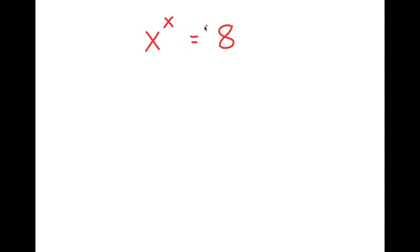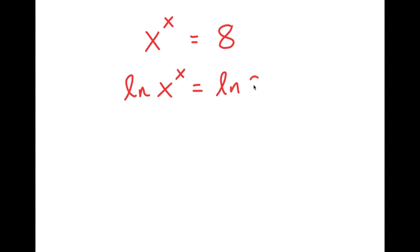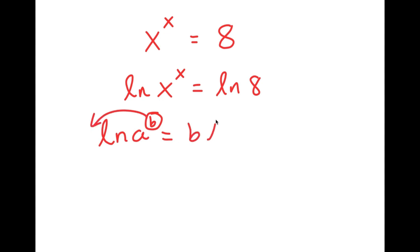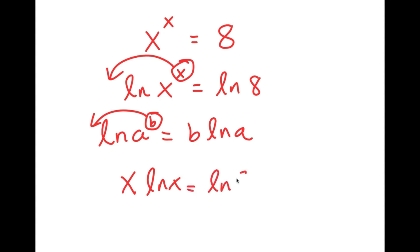At first glance, this problem may look challenging. To solve this, I'm going to first start by taking the ln, or natural log, on both sides. So I'll get ln of x to the power of x is equal to ln 8. A helpful property of logarithms is that if I have something in the form ln a to the power of b, I can move this exponent to the front — it turns into b times ln a. So in this case, I have ln x to the power of x, and I can move x to the front. Now I get x times ln x is equal to ln 8.